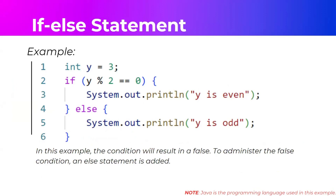For an example, let's say we have variable y equal to 3. Our condition is: if y modulo 2 equals 0. Modulo returns the remainder of division, so 3 modulo 2 is 1. Is 1 equal to 0? No — the condition is false. So we proceed to the else statement and get the output 'y is odd' rather than 'y is even'.